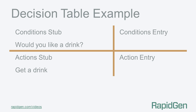In our stub example, our test is 'Would you like a drink?' but it could be something similar like 'Am I thirsty?' The action related to this is to get a drink. The entries for the condition test 'Would you like a drink?' are yes/true or no/false, and the associated action for the test being true is X — perform the action — or dot — don't perform the action.